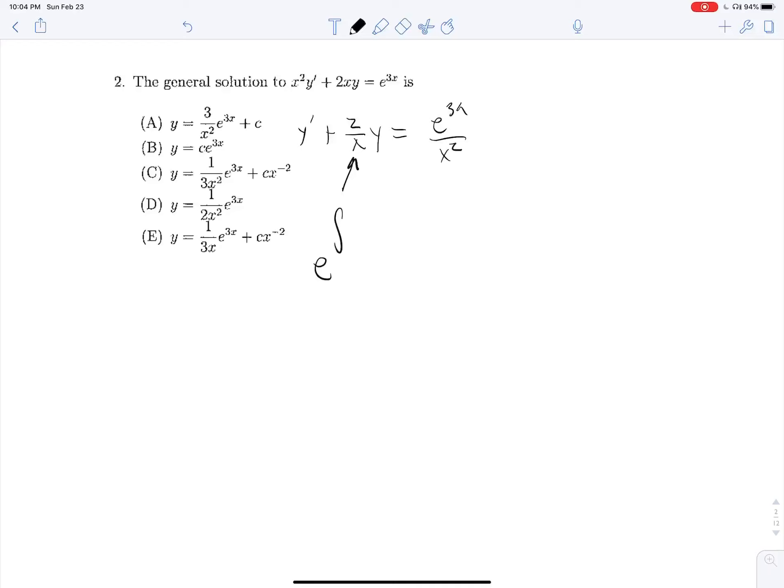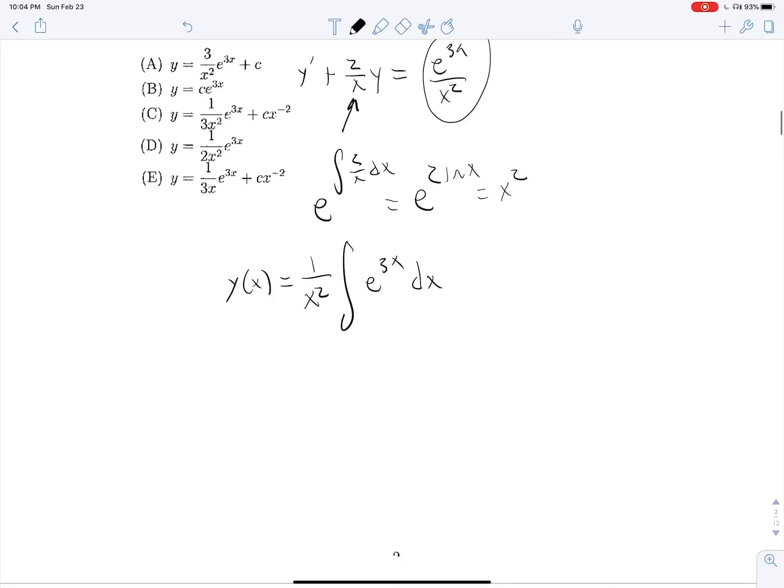We're going to raise e to the integral dx of this guy right here. So e to the integral 2 over x dx is equal to e to the 2 ln x, which is the same thing as x raised to the second power. And we know that y of x is equal to 1 over what we found from here, so 1 over x squared times the integral of this guy, of rho of x, which is x squared, multiplied by q of x, the guy that we have sitting on the right side. And that will be e to the 3x over x squared. And these two are going to cancel out.